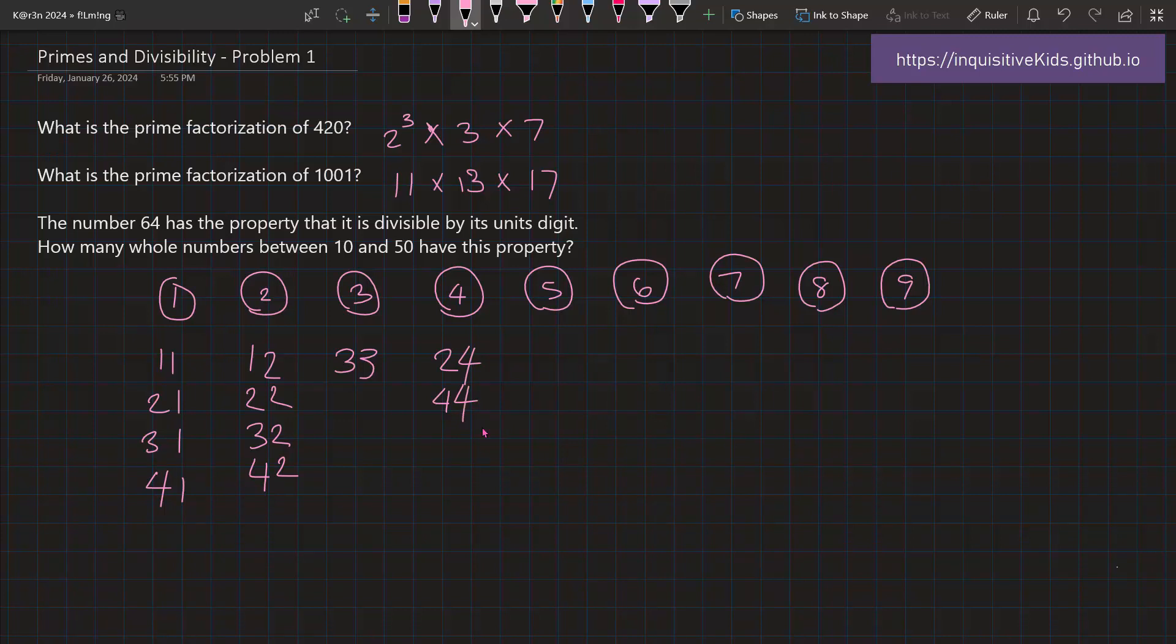But then, the same thing from 1 and 2 applies to 5. Because since it already ends with a 5, it must be divisible by 5. So therefore, 15, 25, 35, and 45 are all valid.